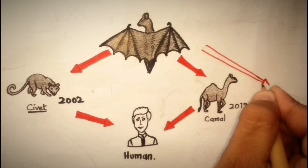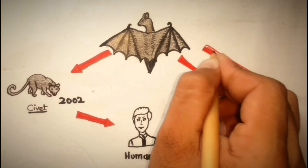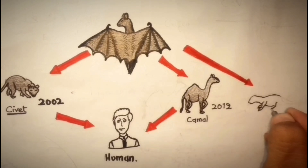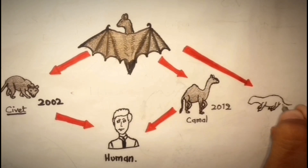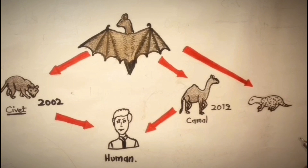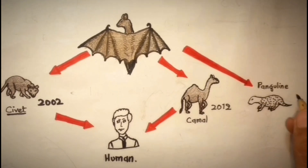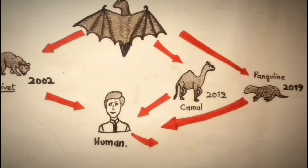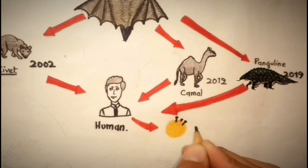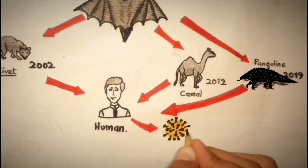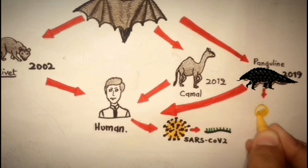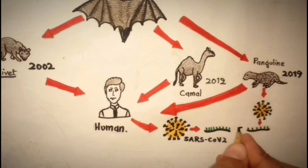Regarding the intermediate animal host of SARS-CoV-2, it has been considered that pangolin is the intermediate host for this virus, because the genetic sequence identity between coronavirus found in pangolin and SARS-CoV-2 is 99 percent identical.